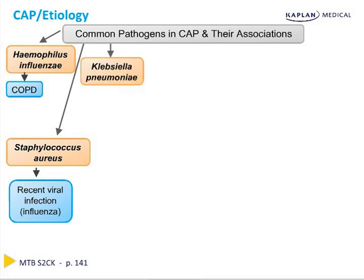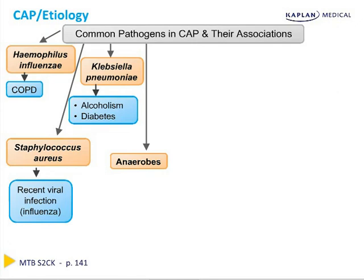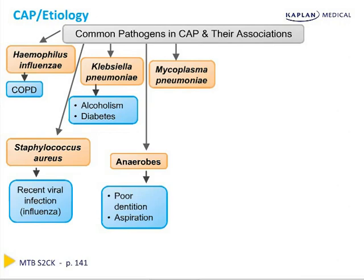Klebsiella pneumoniae commonly causes pneumonia in patients with alcoholism and diabetes. Anaerobes can also cause community-acquired pneumonia. Because anaerobes are part of the typical mouth flora, patients with poor dentition, and in particular those who are aspirating, can develop anaerobic community-acquired pneumonia. Mycoplasma pneumoniae can also cause pneumonia, and this typically occurs in young healthy patients, often in settings where many people are living in very close quarters.